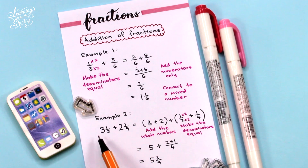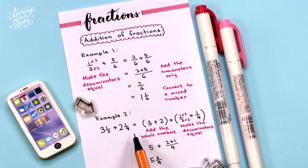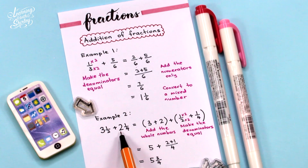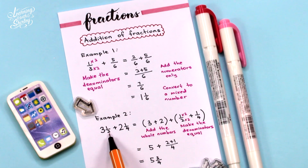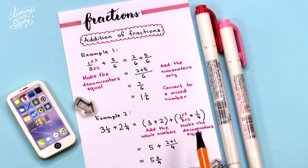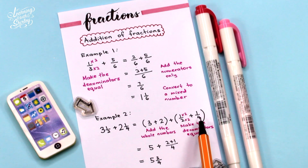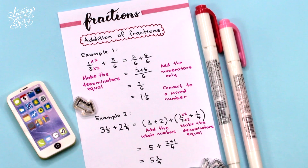Example 2: 3 and 1 over 2 plus 2 and 1 over 4. First, we add the whole numbers: 3 plus 2 equals 5. Then we look at the fractions: 1 over 2 and 1 over 4. We make the denominators equal by changing 1 over 2 to 2 over 4 (multiplying top and bottom by 2). So 2 over 4 plus 1 over 4 gives 3 over 4. Bringing down the 5, the final answer is 5 and 3 over 4.